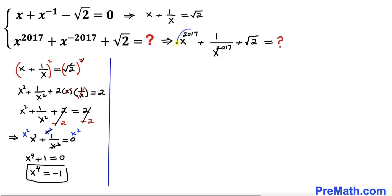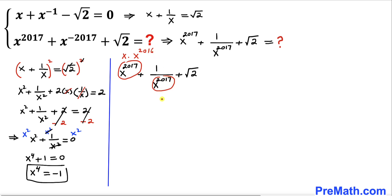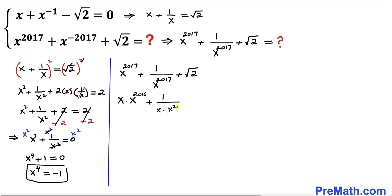Now we are going to calculate the value of the target expression. Let's tweak x power 2017: this could be written as x times x power 2016. Likewise 1 divided by x power 2017 becomes 1 divided by x times x power 2016. So the expression becomes x times x power 2016 plus 1 divided by x times x power 2016 plus square root of 2. Now let's focus on x power 2016 — the exponent 2016 can be written as 4 times 504.